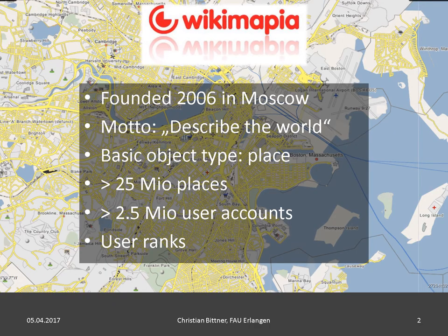Wikimapia is a Web 2.0 mapping platform that was founded in Moscow back in 2006. It follows the general motto 'let's describe the world,' and the main data object is the place, represented by a polygon of any size or shape — from a single house up to a whole region. These place objects can be augmented by category assignments, textual descriptions, pictures, or comments. At the moment, Wikimapia is one of the largest VGI projects with 2.5 million user accounts — though only a minority are regular mappers — and more than 25 million places in the database.